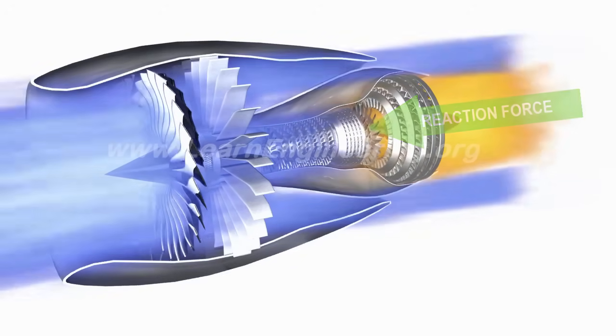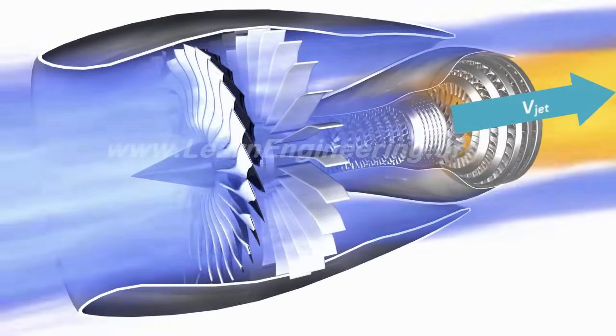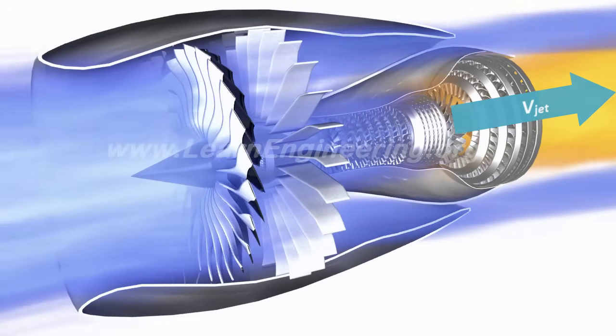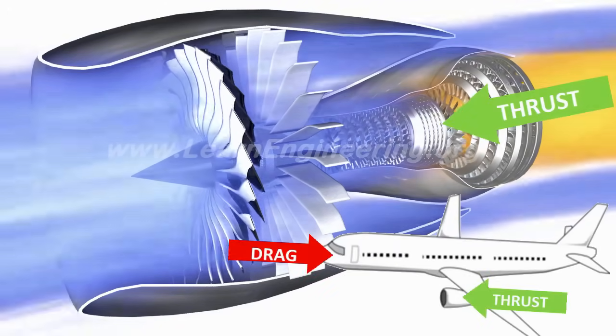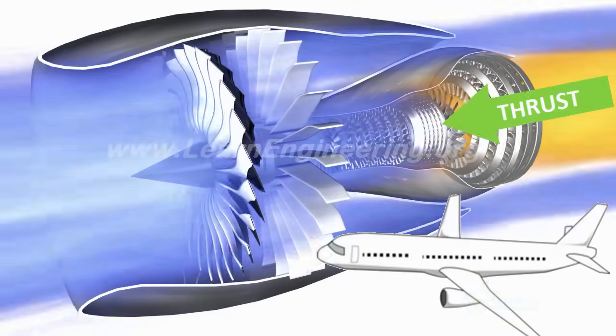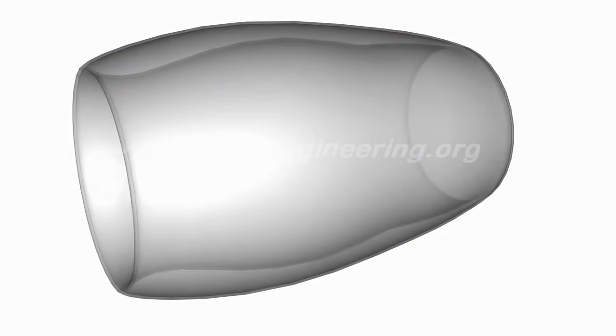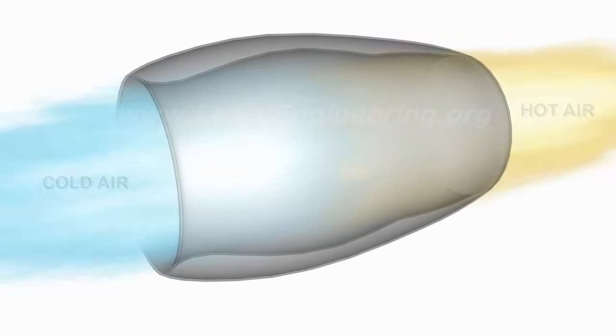So the working of jet engine is all about producing a high-speed jet at the exit. The higher the speed of the jet, the greater the thrust force. The thrust force makes an aircraft move forward. Such high-speed exhaust is achieved by a combination of techniques. If you can heat the incoming air to a high temperature, it will expand tremendously and will create the high-velocity jet.